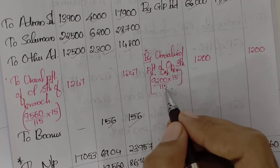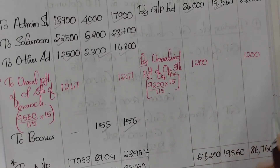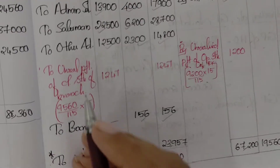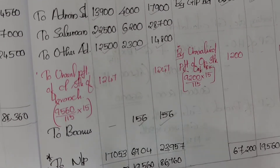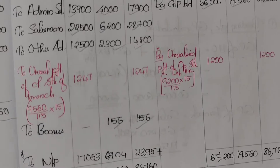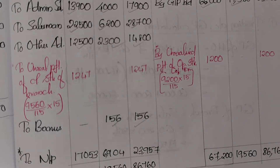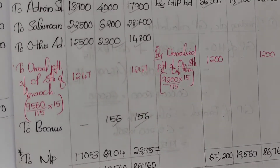Opening stock of branch finished goods is 9200. Unrealized profit = 9200 ÷ 115 × 15 = 1200. Closing stock is 9560, so unrealized profit on closing stock = 9560 ÷ 115 × 15. Head office transfers goods to branch at cost plus loading, meaning there is unrealized profit to transfer and adjust.